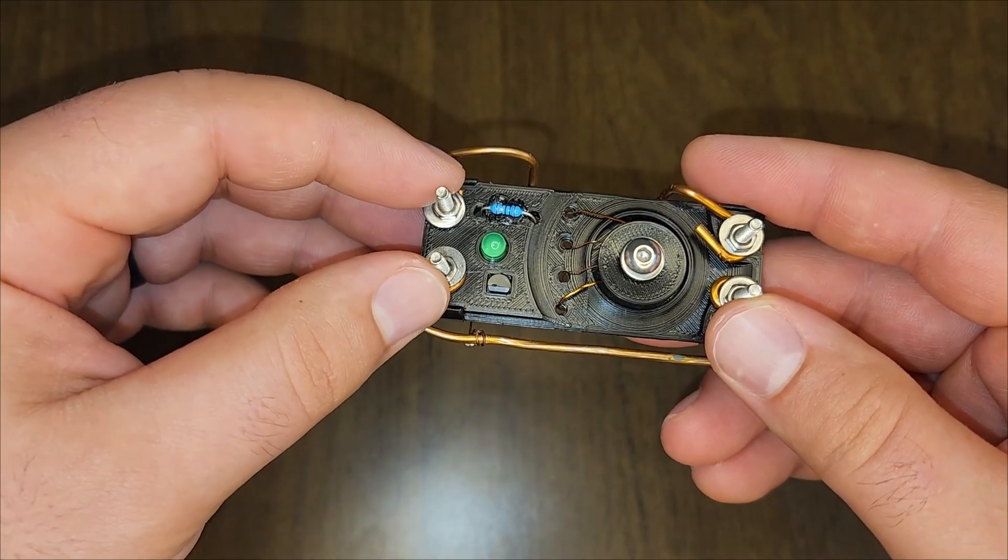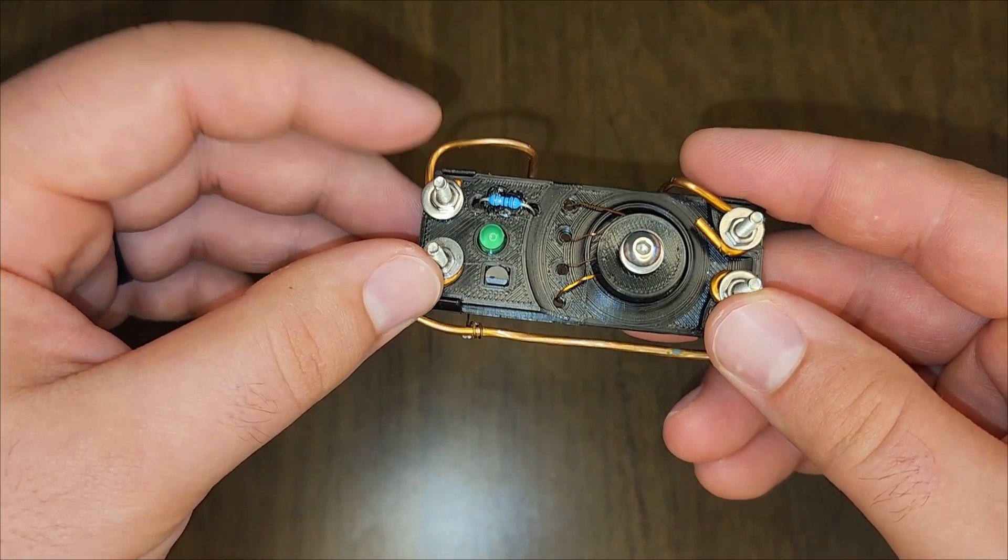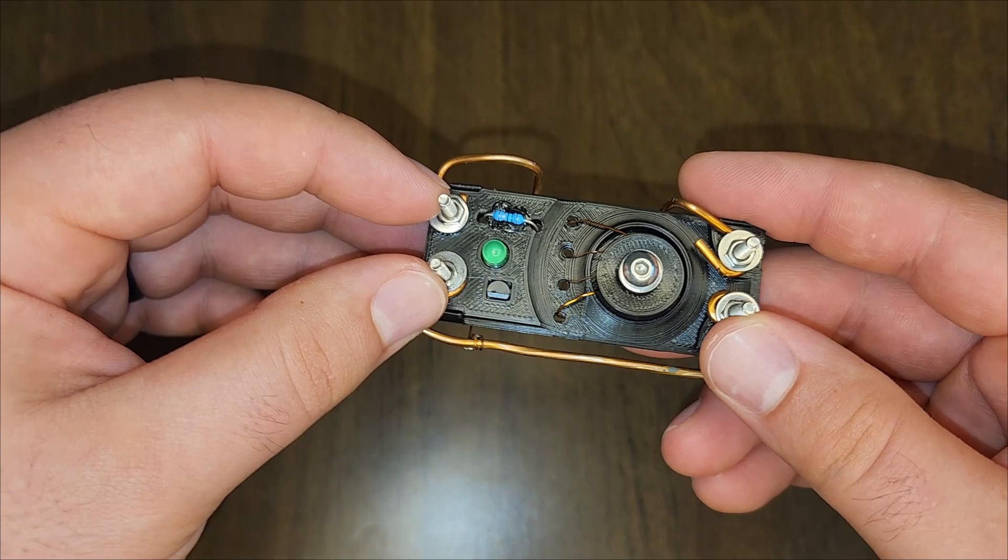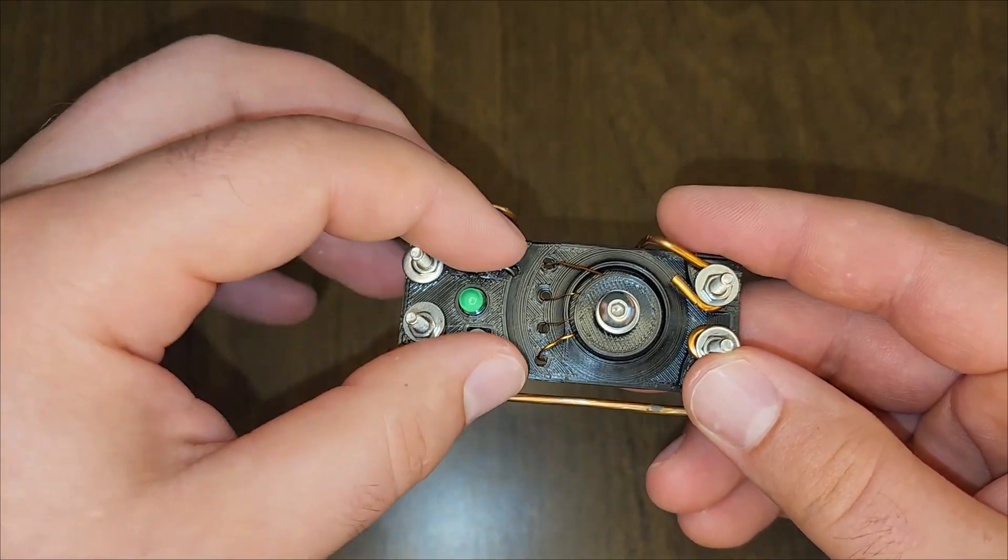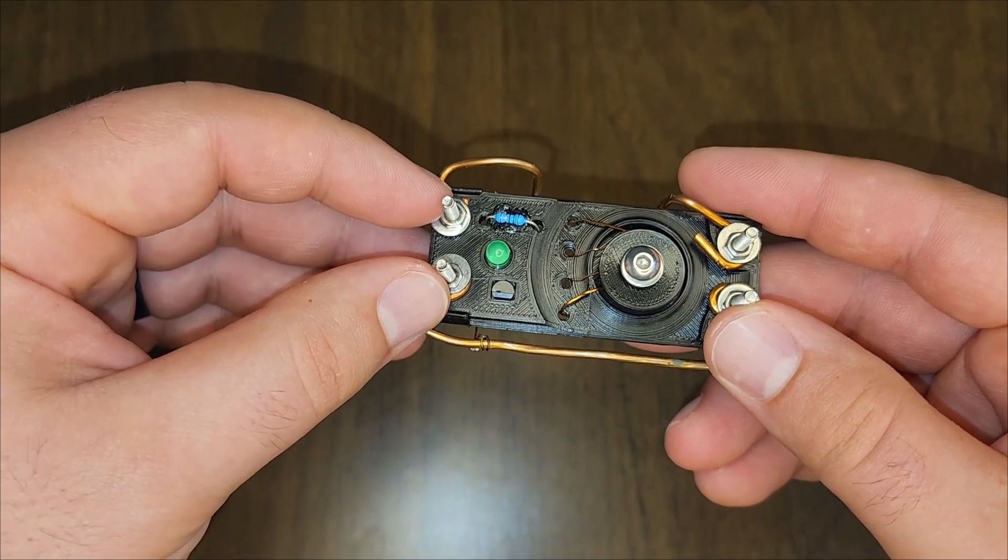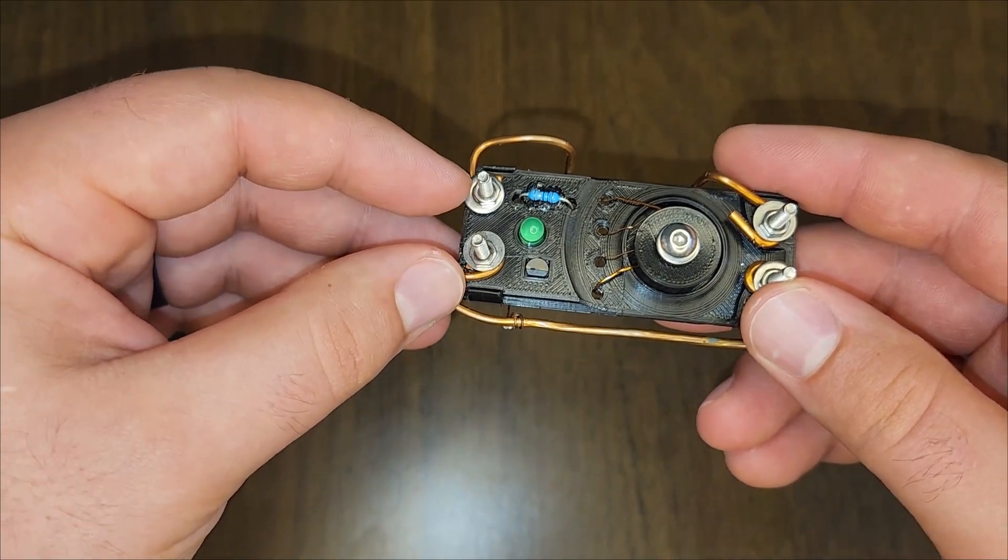These two terminals on the other side of the joule thief are output terminals. This allows me to draw power from the boosted side of the circuit and that's how I connected power to the flashlight at the start of the video.